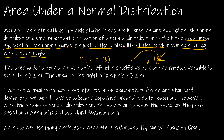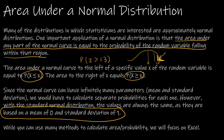What you need to understand is that finding the area to the left is the same as finding the probability that X is less than some value, and the probability to the right is the same as the area to the right of some value. Because the normal curve can have infinitely many parameters — as many means and standard deviations as we can think of — we'd need separate probabilities for all of that. But with the standard normal distribution, which has a mean of zero and a standard deviation of one, that makes it really easy.